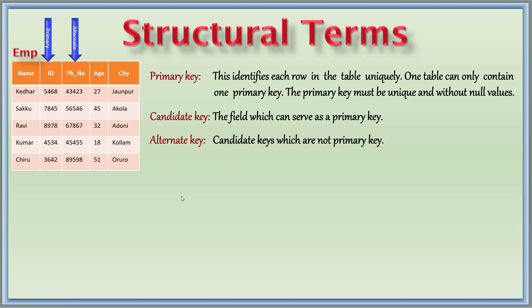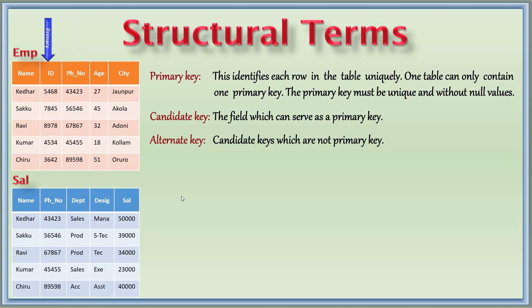If we are considering another table called salary, I have mentioned here Sal. Here phone number is there, and department, designation, salary, and name is there. So only phone number can be identified as primary key, so we make this as primary key here.